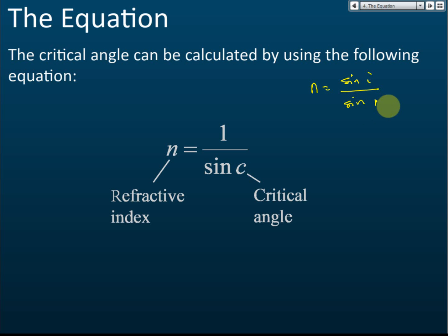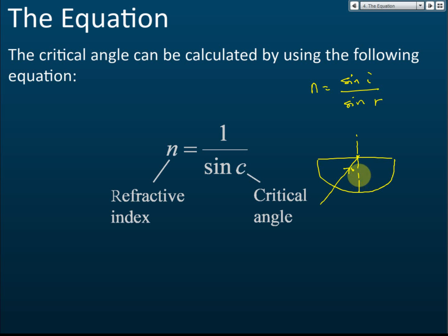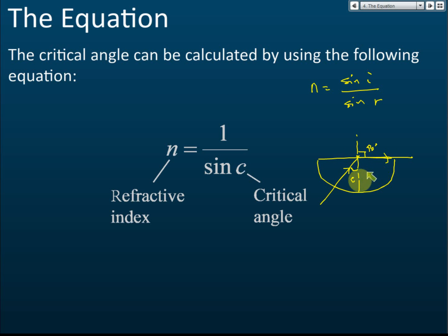At the critical angle — let's label this critical angle as c — the angle of refraction will be 90 degrees. So in this case, which one is i and which one is r?